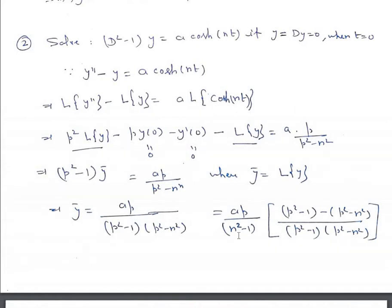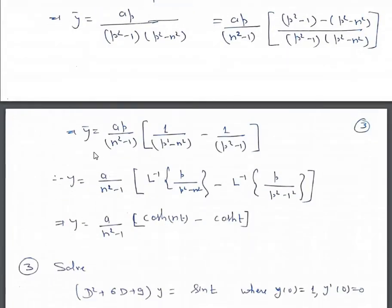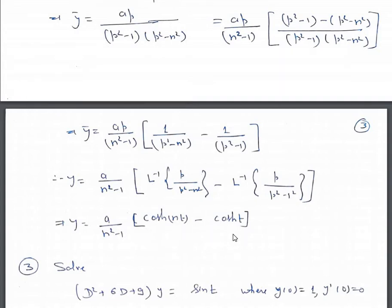This can be rewritten using partial fractions as a·p/(n² - 1) multiplied by [(p² - 1) - (p² - n²)] / [(p² - 1)(p² - n²)]. So ȳ = a/(n² - 1) · [1/(p² - n²) - 1/(p² - 1)]. Taking inverse Laplace: y = a/(n² - 1) · [cosh(nt) - cosh(t)].